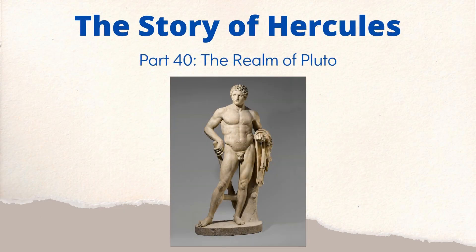Hey everyone, in this video we're going to take a look at Part 40 from the Hercules story from Ritchie's Fabulae Faciles. This part is called 'The Realm of Pluto.' At this point in the story, Hercules is on his last labor — the 12th labor — where he needs to get Cerberus, the hellhound, back. Ritchie has been giving us a little intro into what the underworld looks like, and that continues here with a description of the realm of Pluto.